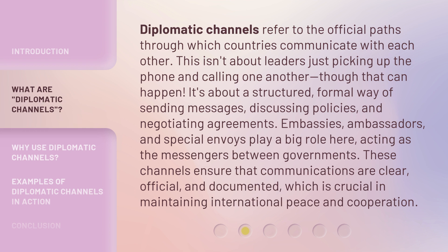Diplomatic channels refer to the official paths through which countries communicate with each other. This isn't about leaders just picking up the phone and calling one another, though that can happen. It's about a structured, formal way of sending messages, discussing policies, and negotiating agreements. Embassies, ambassadors, and special envoys play a big role here, acting as the messengers between governments. These channels ensure that communications are clear, official, and documented, which is crucial in maintaining international peace and cooperation.